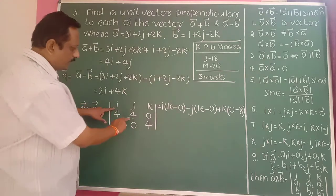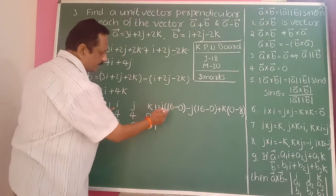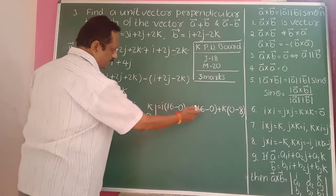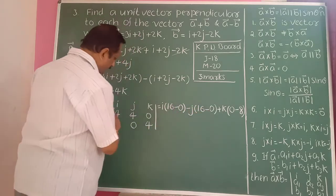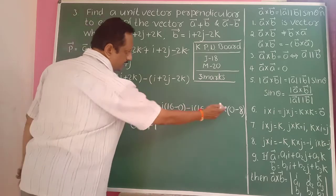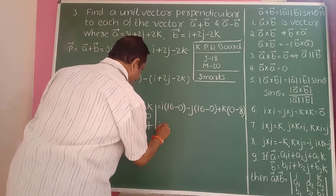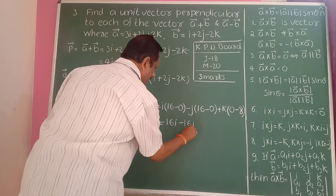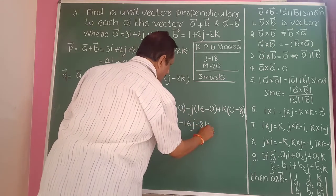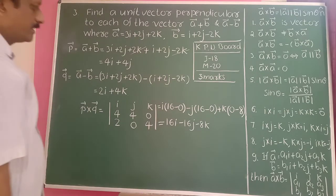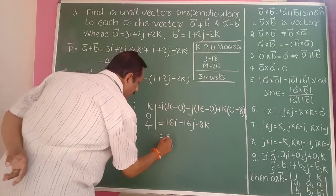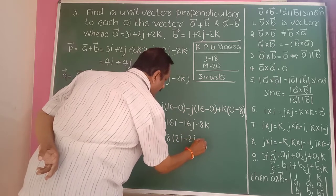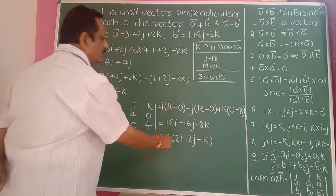Expanding: i into (4×4 minus 0×0) gives 16 minus 0, that is 16. Minus j into (4×4 minus 2×0) gives 16 minus 0, that is minus 16j. Plus k into (4×0 minus 4×2) gives 0 minus 8, that is minus 8k.